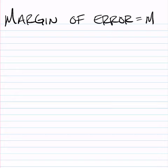By definition, the margin of error is the largest amount we expect the point estimate to differ from the parameter being estimated.